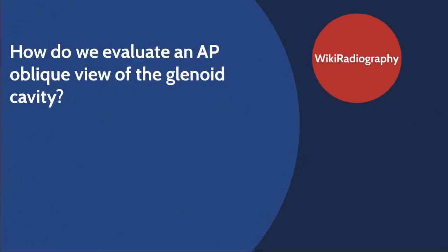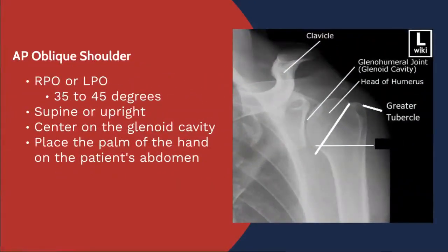Let's talk about the AP Oblique view of the shoulder, particularly the glenoid cavity, sometimes called the Grashey view, depending on who you're talking to. And as always, a shout out to Wikiradiography for providing us some free pictures. This is a good AP Oblique shoulder view, but I want to point out a couple of things. There was some mislabeled anatomy here that I've covered with a blocker, but I've also included a correctly labeled piece of anatomy.